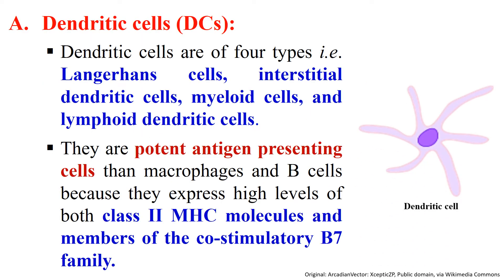Examples of professional antigen presenting cells include dendritic cells, macrophages, and B cells. Dendritic cells get their name because they are covered with long membrane extensions that resemble the dendrites of nerve cells. Generally there are four types of dendritic cells: Langerhans cells, interstitial dendritic cells, myeloid cells, and lymphoid dendritic cells. Dendritic cells are very potent antigen presenting cells compared to macrophages and B cells, because they express high levels of class 2 MHC molecules and also express the co-stimulatory B7 molecule.